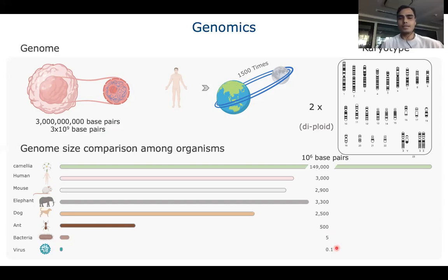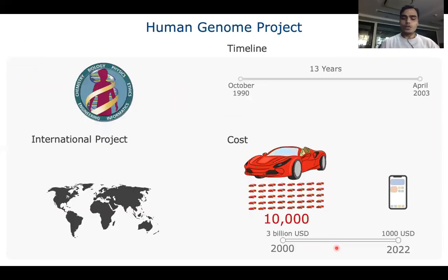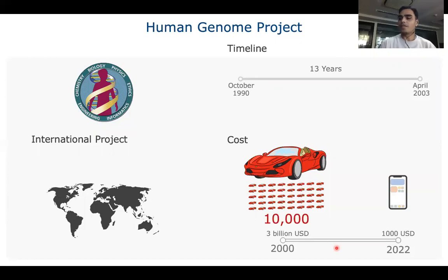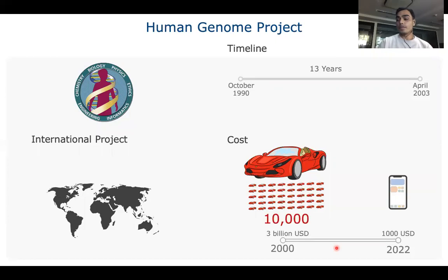After understanding the basic genomic structure and size, the next step was to know the complete A, T, G, C sequence of our genome. To do that, there was a project called the Human Genome Project — an international scientific research project with the goal of determining the base pairs that make up human DNA, and identifying, mapping, and sequencing all the genes of the human genome from both a physical and a functional standpoint. It remains the world's largest collaborative biological project.